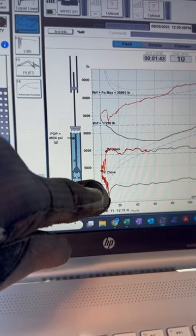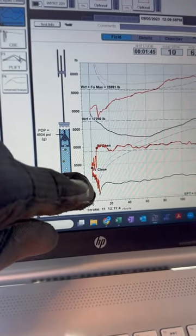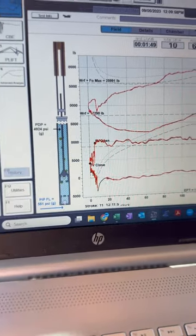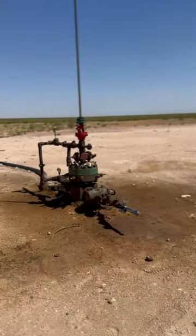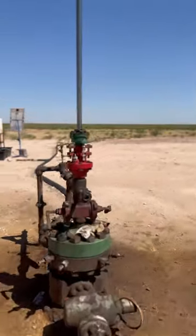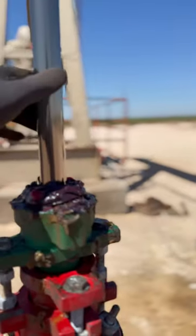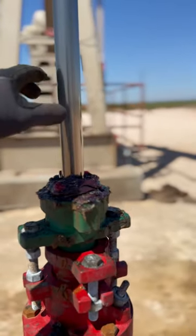When the rods hit the bottom, or the bottom of the pump tags at the bottom of the barrel, one way that you can know on location is when the rod string goes all the way down.